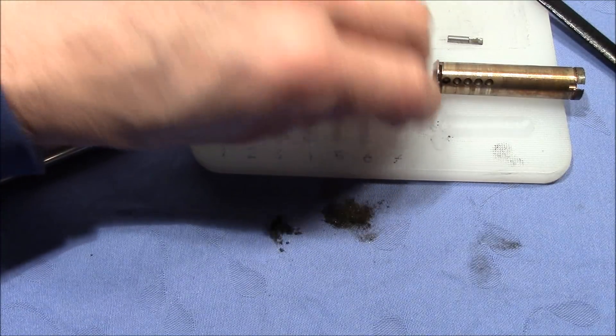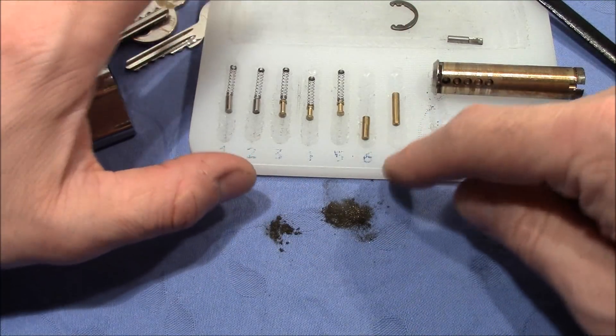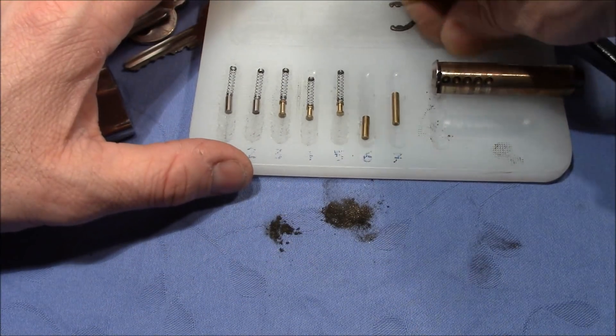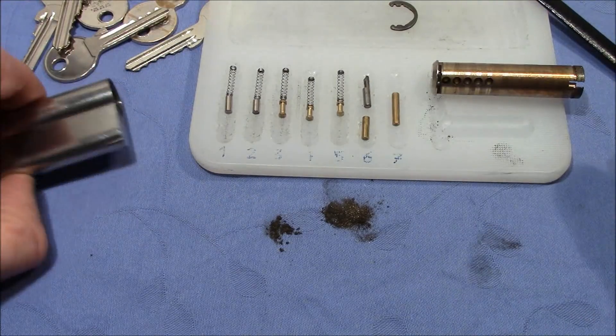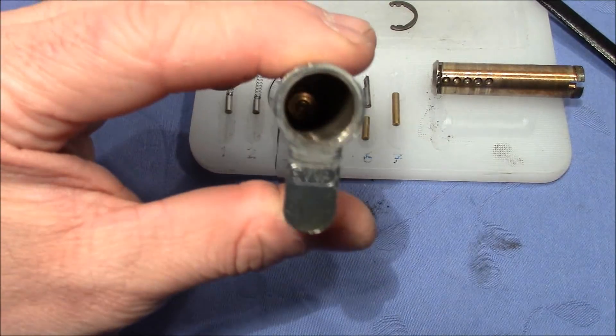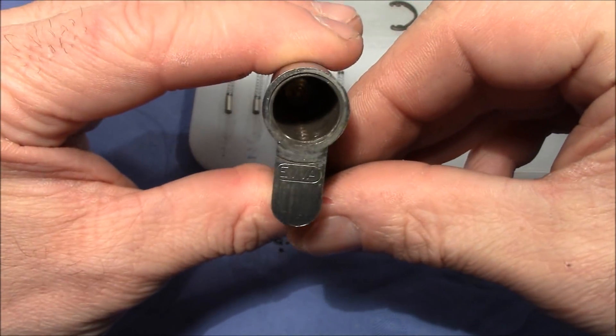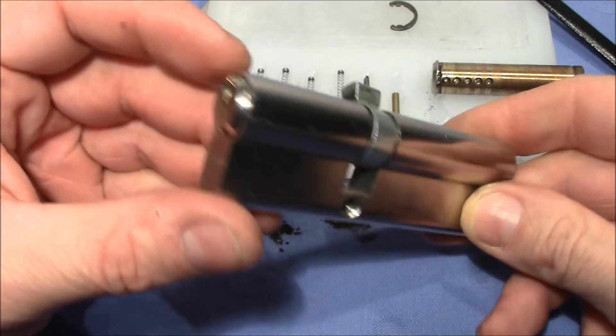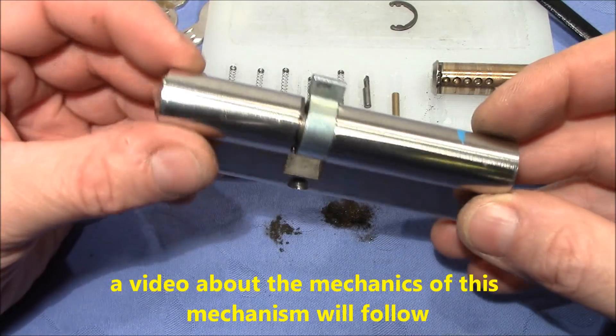All these pieces here, these extra pieces, they come from the mechanism that allows the lock to be operated from both sides at the same time.